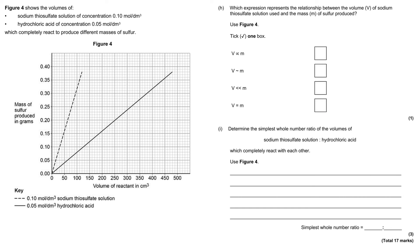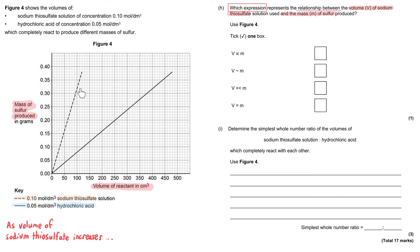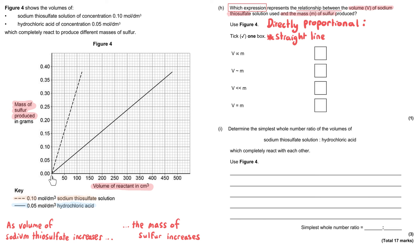A new graph shows the volume of the two reactants on the x-axis and the mass of sulfur produced on the y-axis. The dashed line represents sodium thiosulfate and the solid line represents hydrochloric acid. We're asked which expression shows the relationship between the volume of sodium thiosulfate and the mass of sulfur produced. As the volume of sodium thiosulfate increases, the mass of sulfur also increases, and it is directly proportional — a straight line through the origin (0, 0). So volume is directly proportional to mass produced.